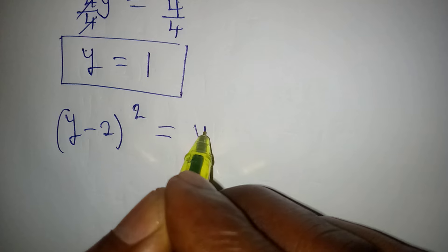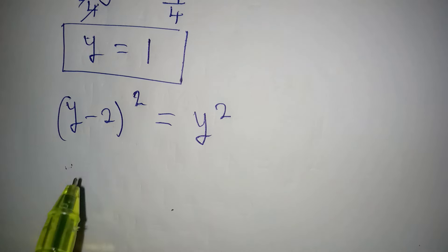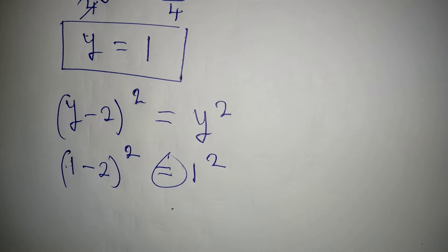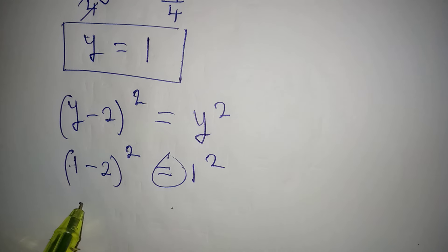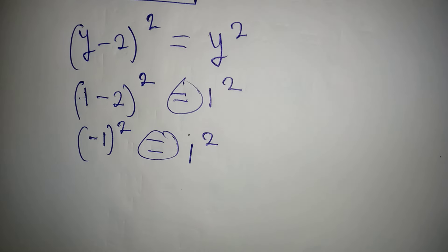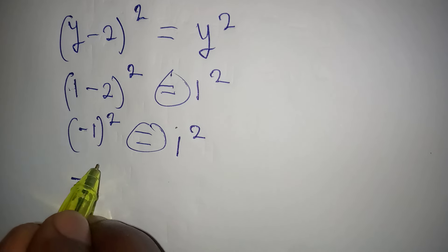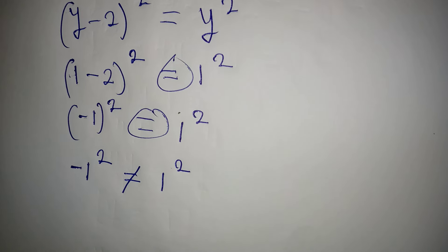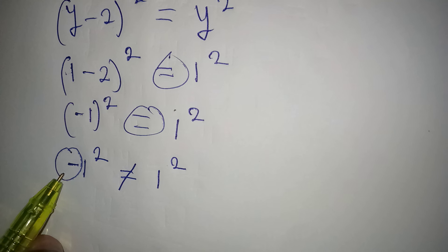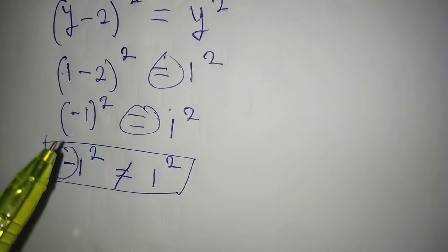Now let's confirm our work. The original equation is (y minus 2) squared equals y squared, and y is now 1. So we have (1 minus 2) squared equal to 1 squared. It's important to put the result in brackets: if you write minus 1 squared without brackets, the square only applies to 1, then multiplied by the negative, giving minus 1 — which would be wrong.